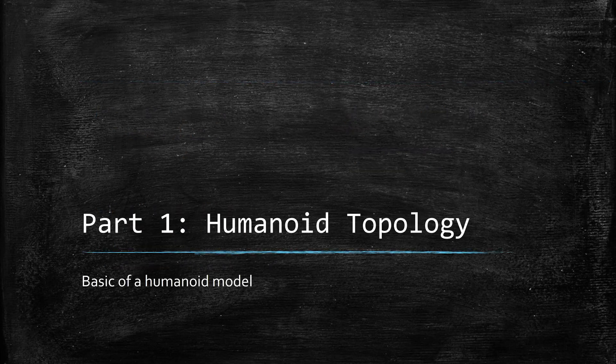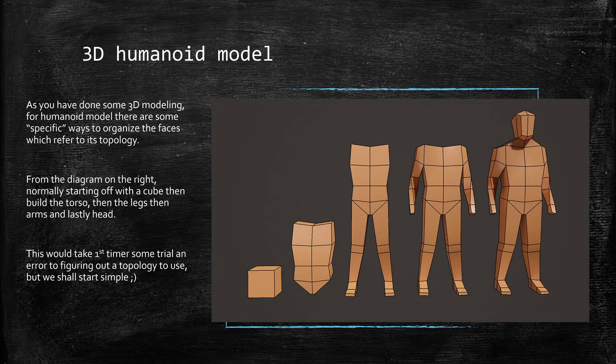The first part is humanoid topology. We start off on the right side with a cube, build the torso, extend the legs, add the arms — I recommend using a T-pose rather than a generic pose — then lastly build the head. We'll keep the polygon count as low as possible, and you can fill in details like hair later. For the basics, we'll keep it simple.